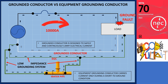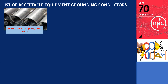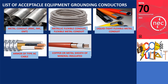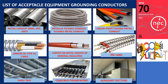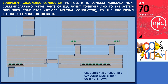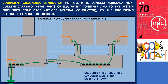The equipment grounding conductor (EGC), as required by the NEC, can be provided in the form of metal conduit, metal sheathing on metal-clad cable, or bare or green-colored wire-type conductors. It is defined in Article 100 as a conductive path that is part of an effective ground-fault current path. Its purpose is to connect normally non-current-carrying metal parts of equipment together into the system-grounded conductor, service-neutral conductor, to the grounding electrode conductor, or both.